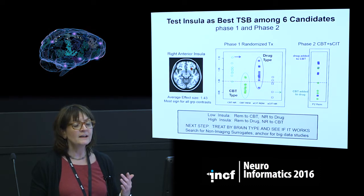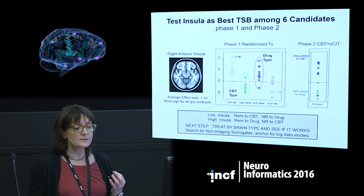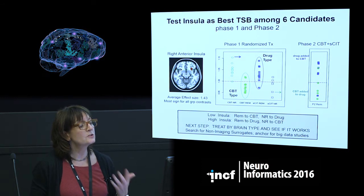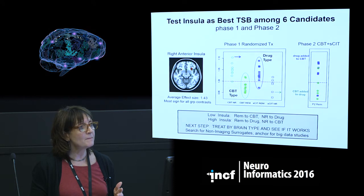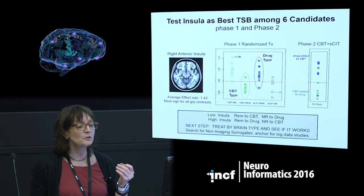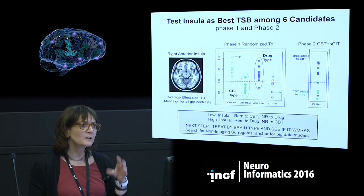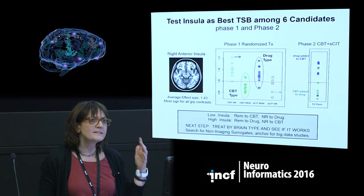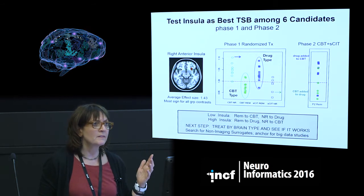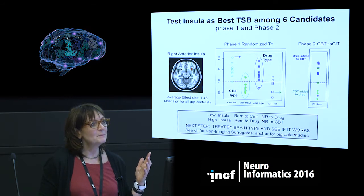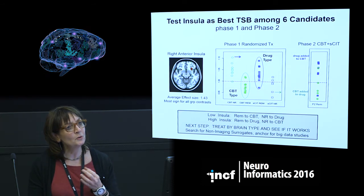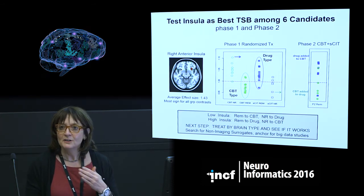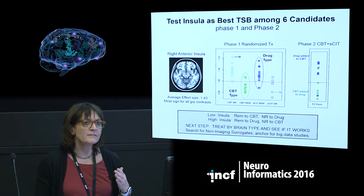The next step is to enroll new patients, scan them, type them, and treat by brain type — with the bar being: you'd better do better than chance, or why would you do a scan? I just want to set up the logic that this could have been done with machine learning, but with machine learning you wouldn't necessarily have known the biology of what was driving your signal.